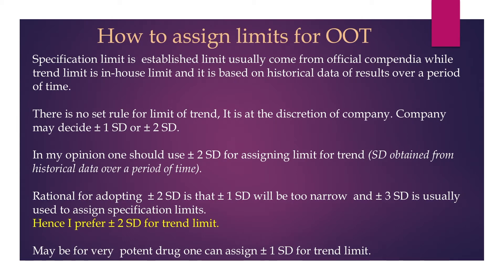How do we collect data for trend analysis? The criteria are: select at least 30 batches for trend analysis; all selected batches must have been produced under the same conditions and according to established procedures without any deviation from the norms; collect the assay results of these 30 batches; all batches must have been analyzed with the same analytical method with no change in testing procedures and no repetition of any test.